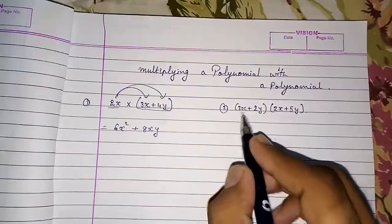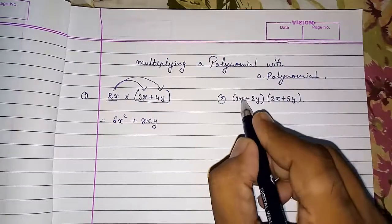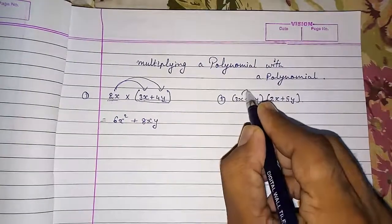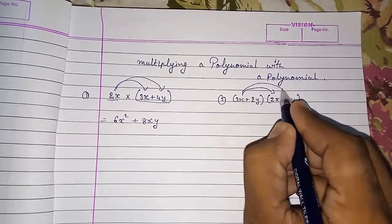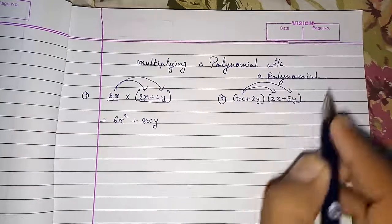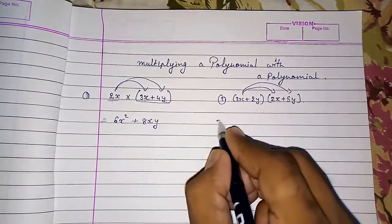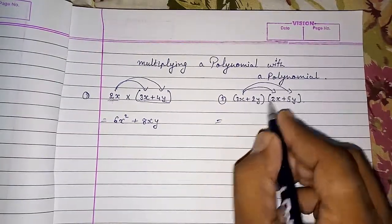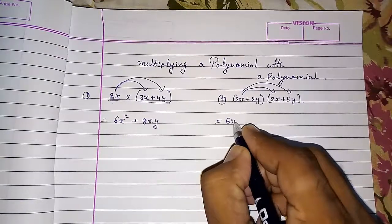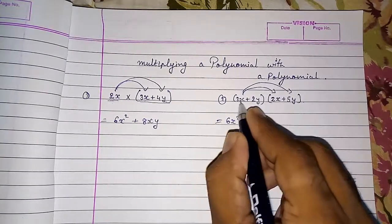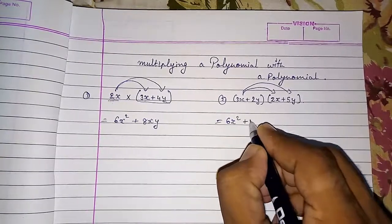Now I am going to multiply a binomial with a binomial. What will happen? First we will multiply 3x with both the numbers. Let us multiply: 3 into 2 is 6, and x into x is x square. Then 3 into 5 is plus 15.